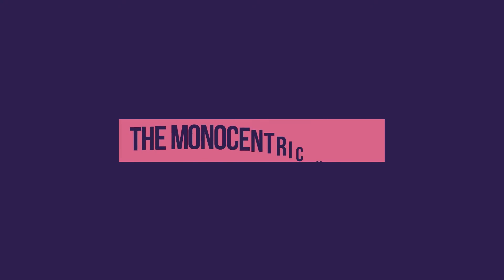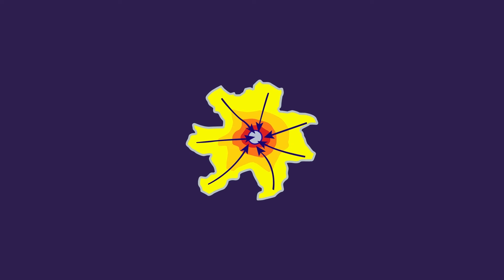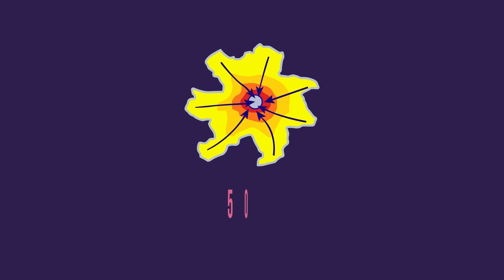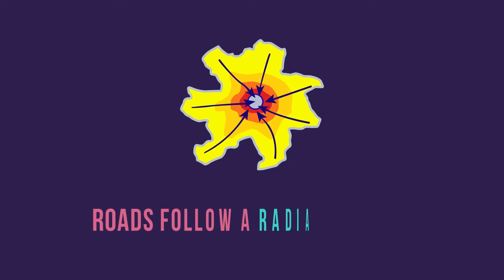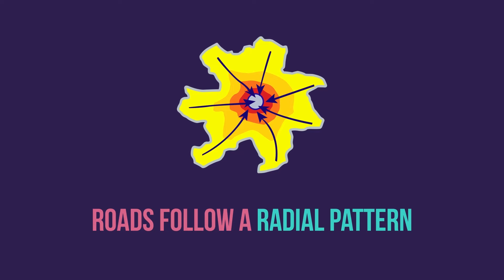With all these facts, let's discuss the different models. The monocentric model is a model that most small cities follow. 50% or more of the jobs are concentrated in its center, which leads to higher density. Roads follow a radial pattern, and everyone can travel the same distance to reach the office, but this model creates congestion if not properly provided for.